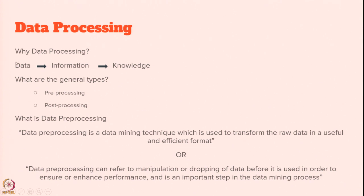Data is raw data. From the raw data, you have to process it to get some information. While processing, you might have used some machine learning algorithms to extract some useful information. Now, it is not always true that raw data can be used as-is while doing the processing to extract information. So we need to do something to make it more useful or so that it can be used in an efficient way. This step is called data pre-processing.